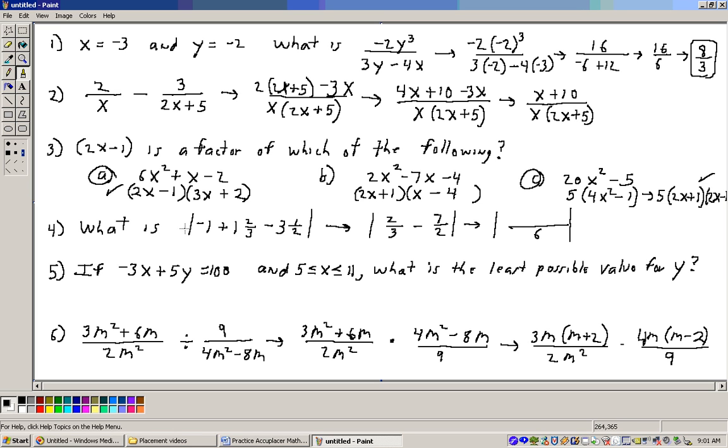Okay, problem 4 says, what is the value of the absolute value of negative 1 plus 1 and 2 thirds minus 3 and 1 half? Well, first of all, minus 1 plus 1 and 2 thirds, I just added these and get 2 thirds. Then I switched minus 3 and 1 half over to an improper fraction. 2 times 3 is 6, 6 plus 1 is 7. So that's minus 7 halves.